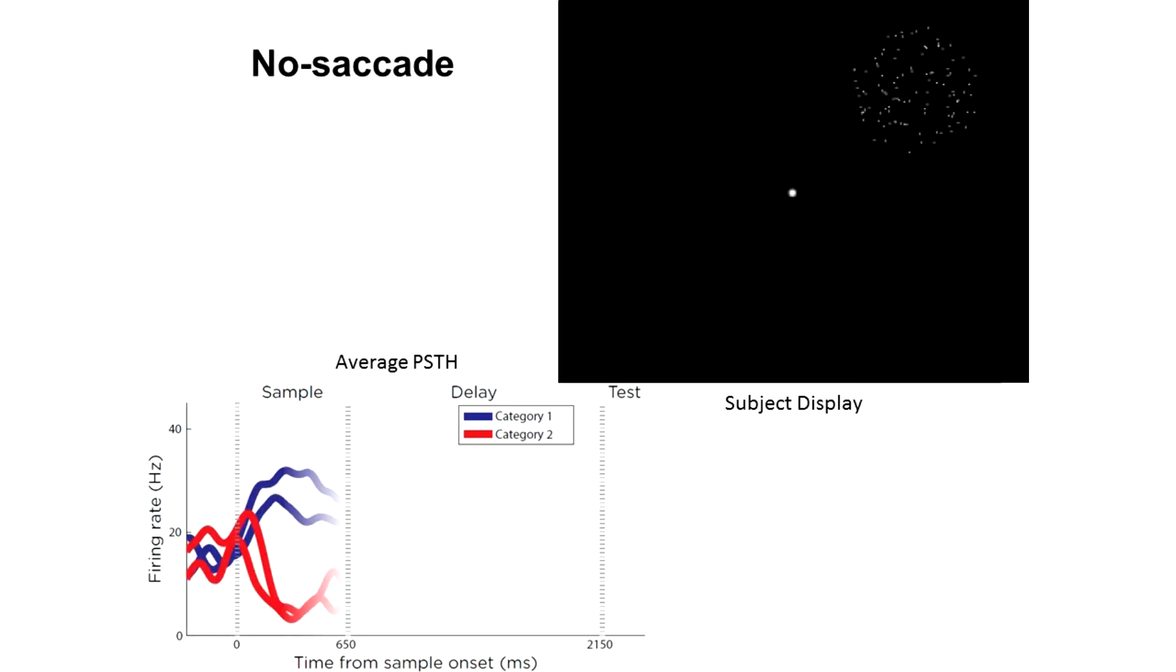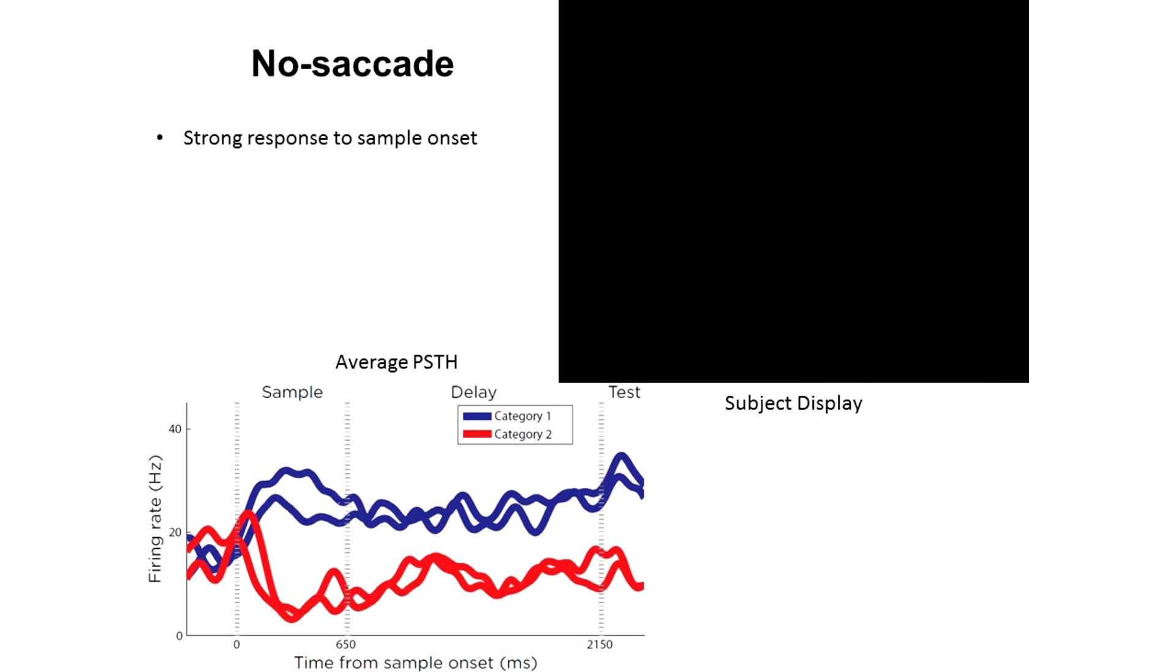Starting with the no saccade condition, we see that category selectivity emerges shortly after the onset of the sample stimulus and is maintained throughout the delay into the test period.